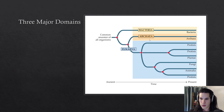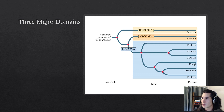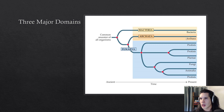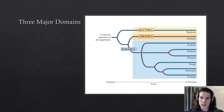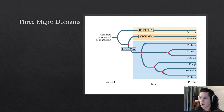Archaea will typically live in extreme environments. Another fun fact: some archaea have lipid monolayers as opposed to lipid bilayers. Bacteria are typically going to have a lipid bilayer. All of our cells — we're part of the animal kingdom, kingdom Animalia, within the domain eukarya — are going to contain lipid bilayers, whereas some strains of archaea have a lipid monolayer.